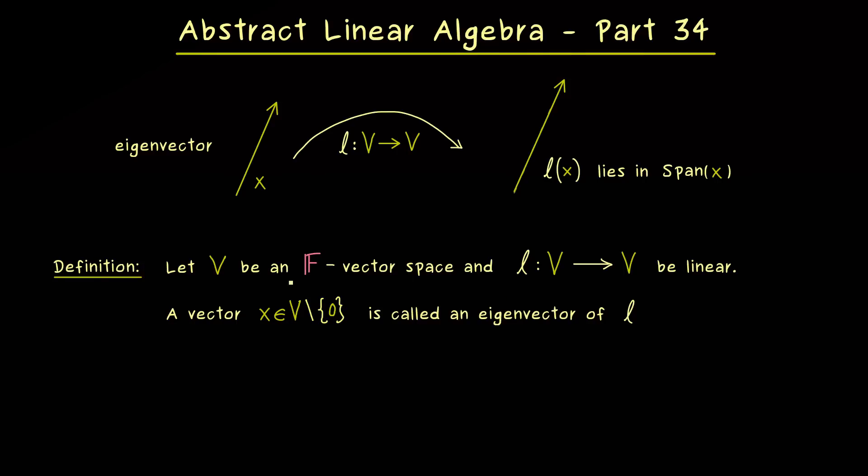This totally makes sense, because the zero vector is always mapped to the zero vector again, so it always lies in the span of the zero vector. So it's not a special property for the zero vector, so we have to exclude it.